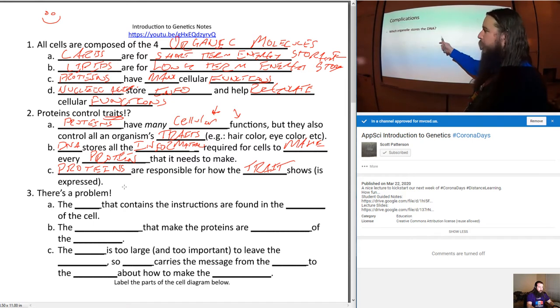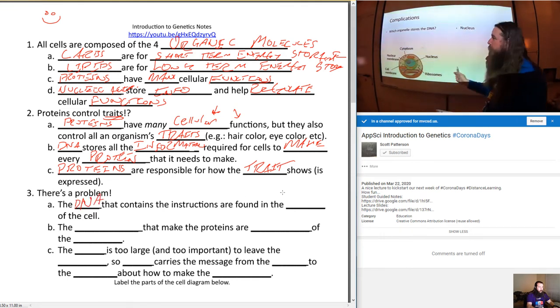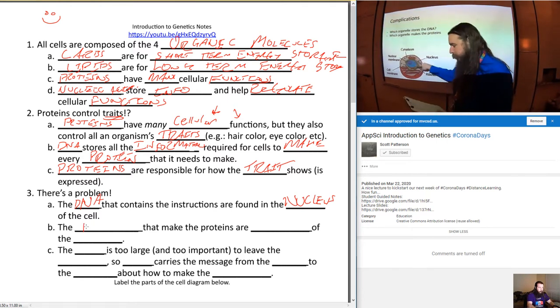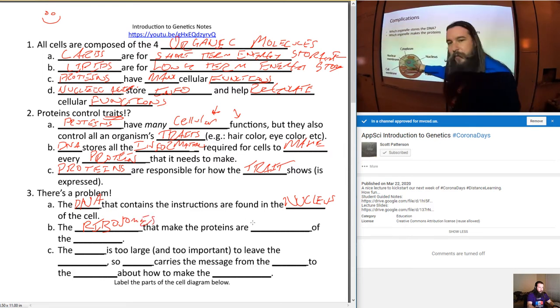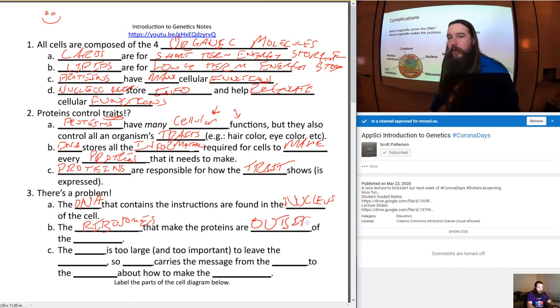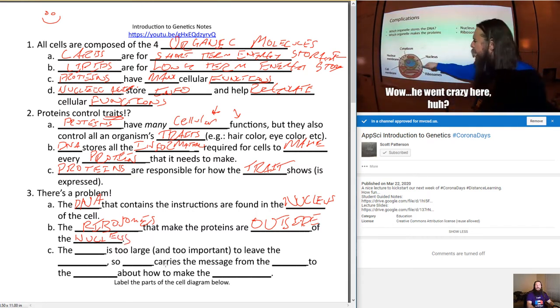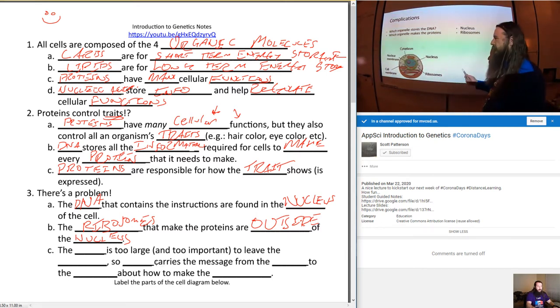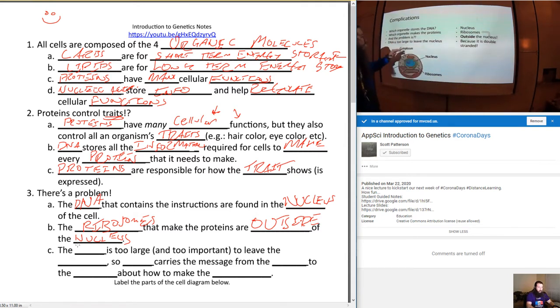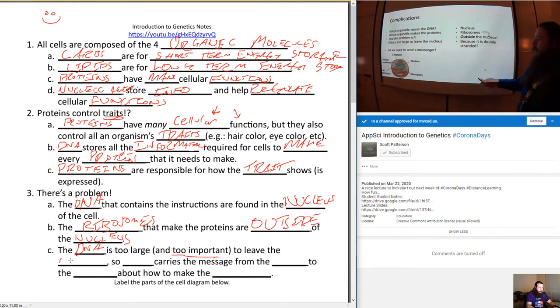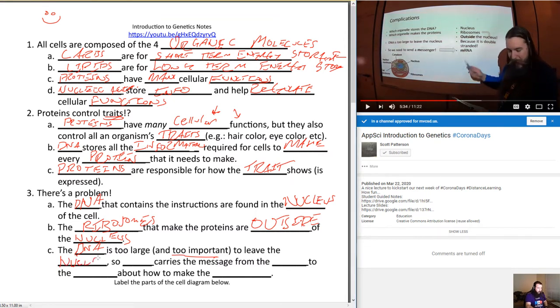Now we're going to talk about what I call the central dogma. Proteins control all the traits as long as they can be passed down. DNA stores that information for every protein. Here we have the actual central dogma, right? You've got your DNA used to make the proteins, those proteins, they control the traits. There's some problems though. The DNA that stores the information is in the nucleus of the cell, the nucleus. So the DNA is in the nucleus of the cell. And which organelle makes the proteins? That would be the ribosomes.